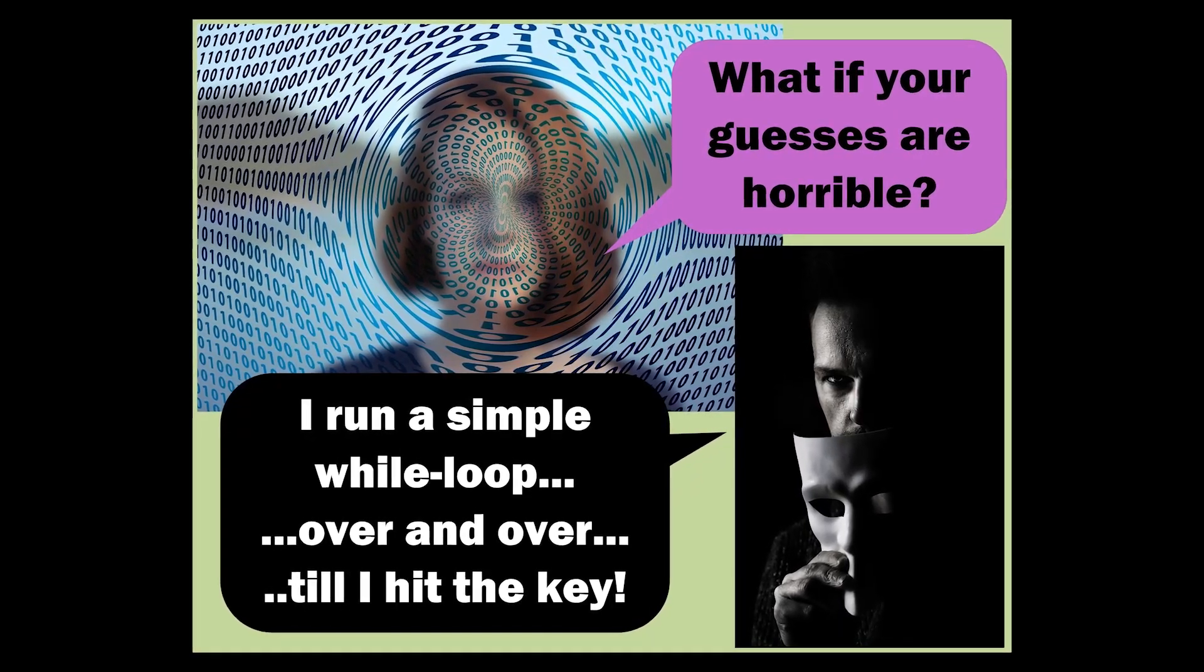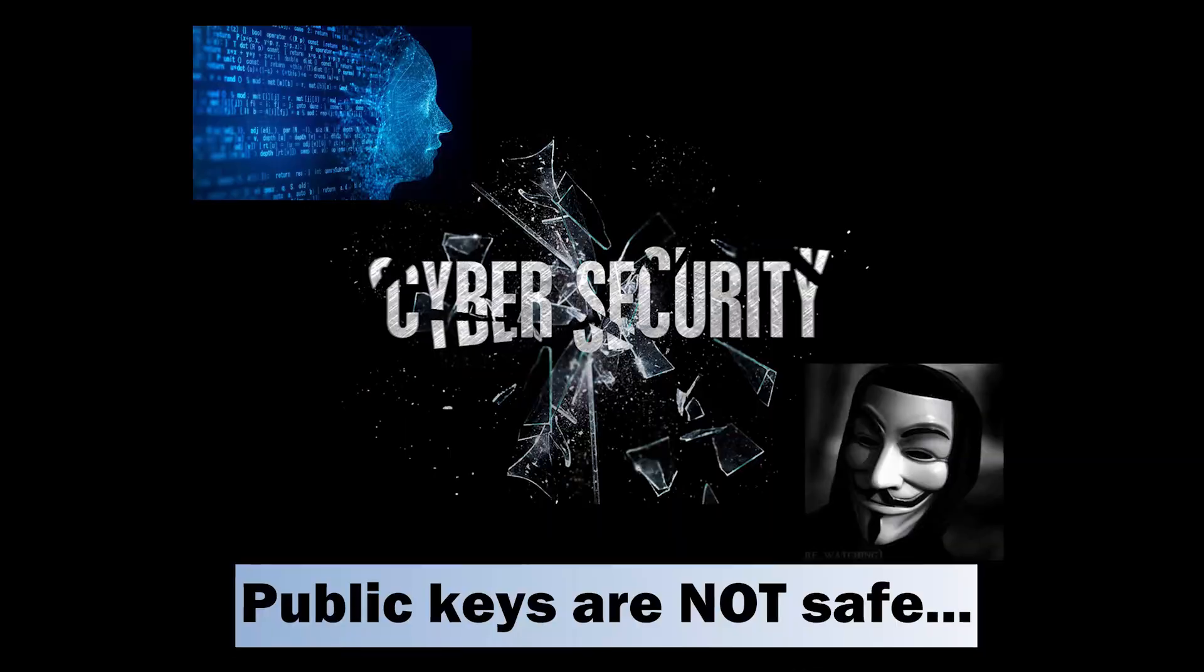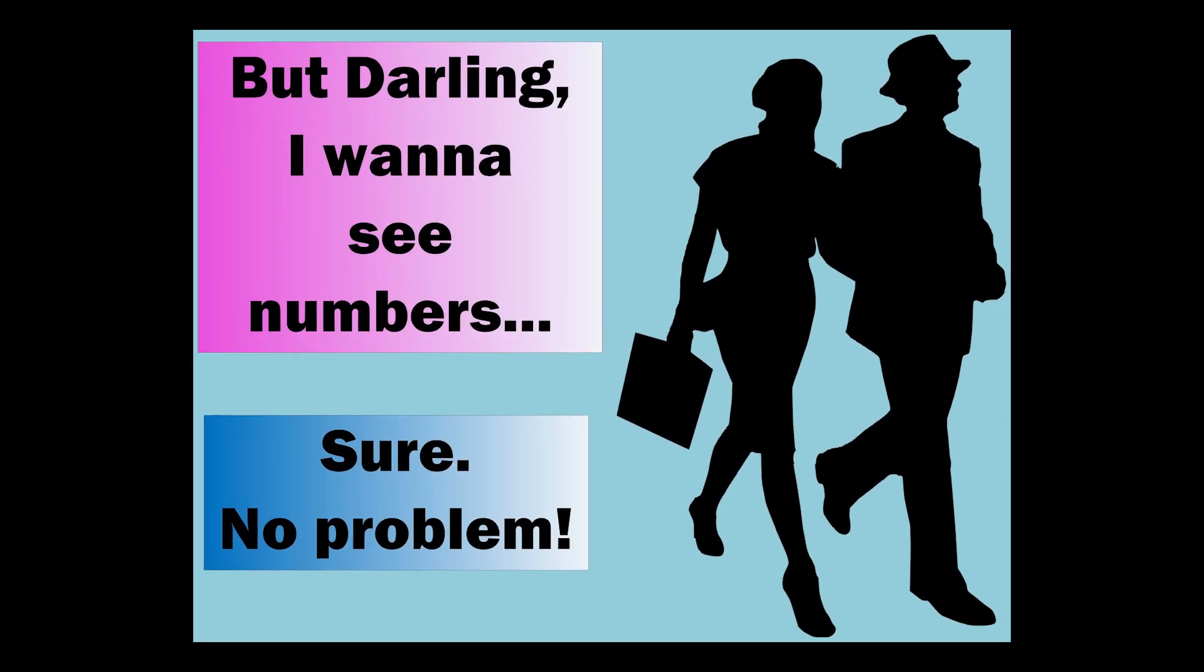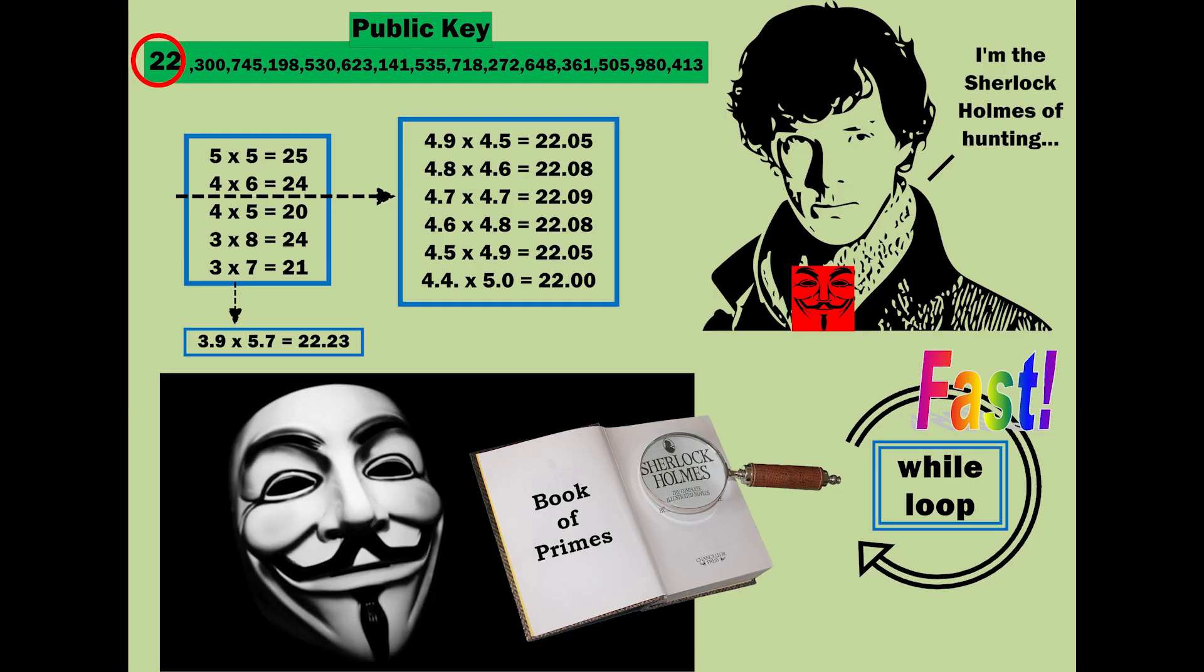What if your guesses are horrible? I run a simple while loop over and over till I hit the key. So now you know, public keys are not safe. But darling, I wanna see numbers. Sure. No problem. Honey, I'm the Sherlock Holmes of hunting. The public key starts with 22. So, some version of 4 and 5 will get me there. I flip through my book of primes and choose a 12-digit.